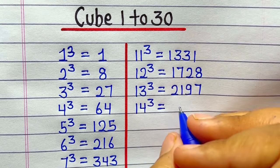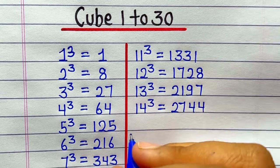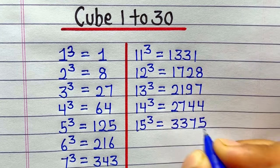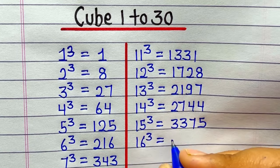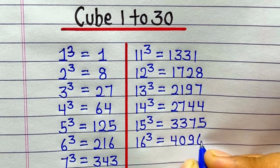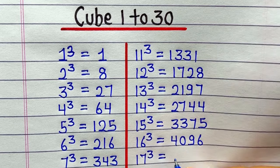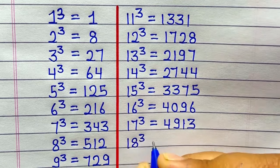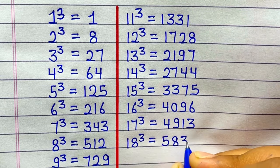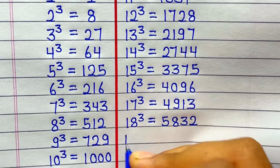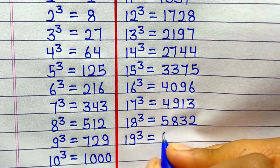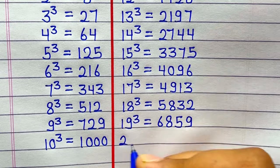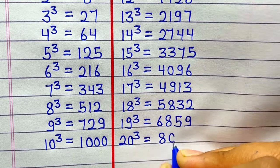14 ka cube hai 2744. 15 ka cube hai 3375. 16 ka cube hai 4096. 17 ka cube hai 4913. 18 ka cube hoga 5832. 19 ka cube hoga 6859. 20 ka cube hai 8000.